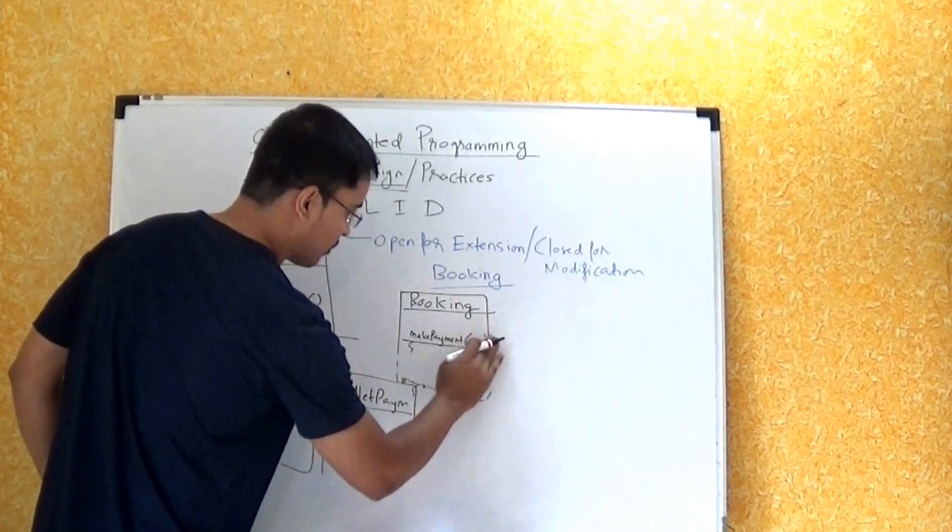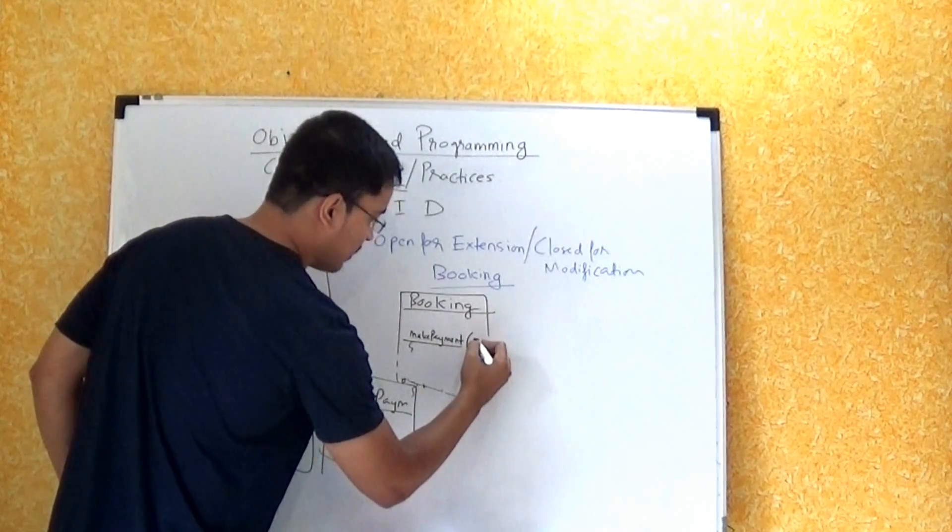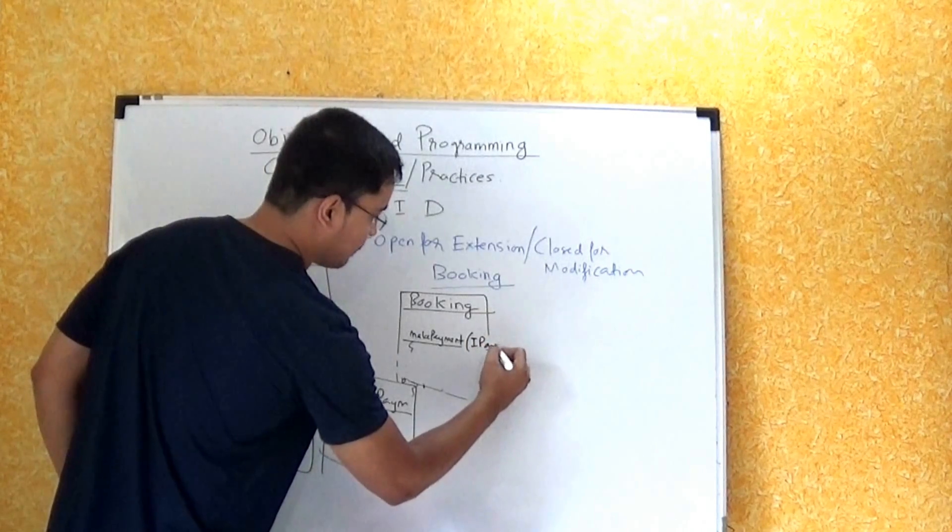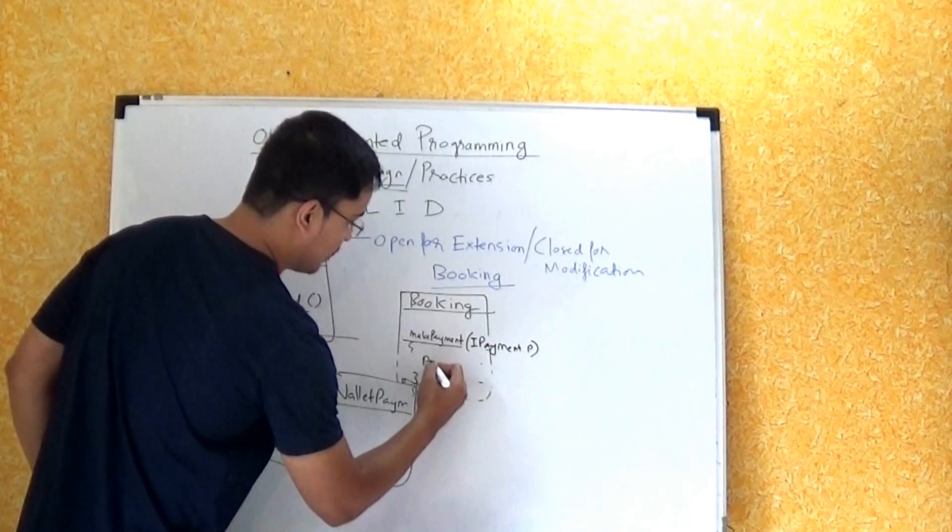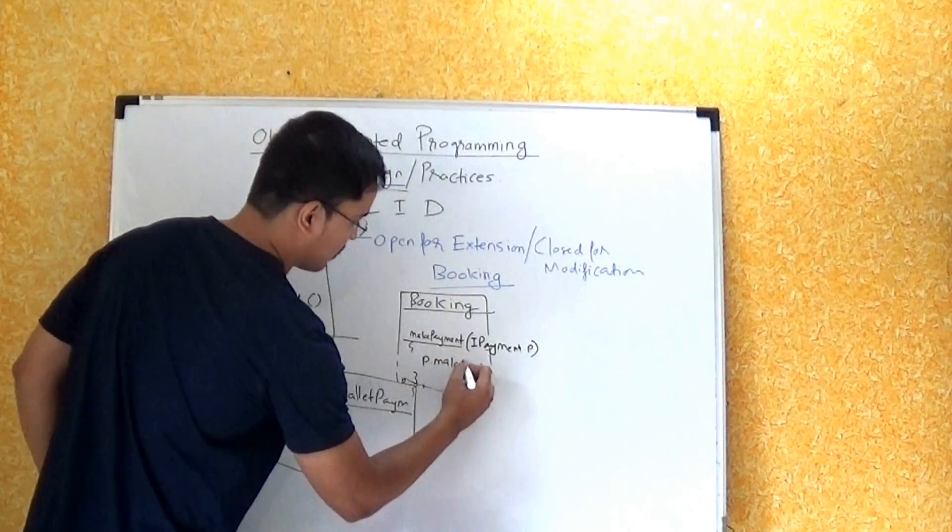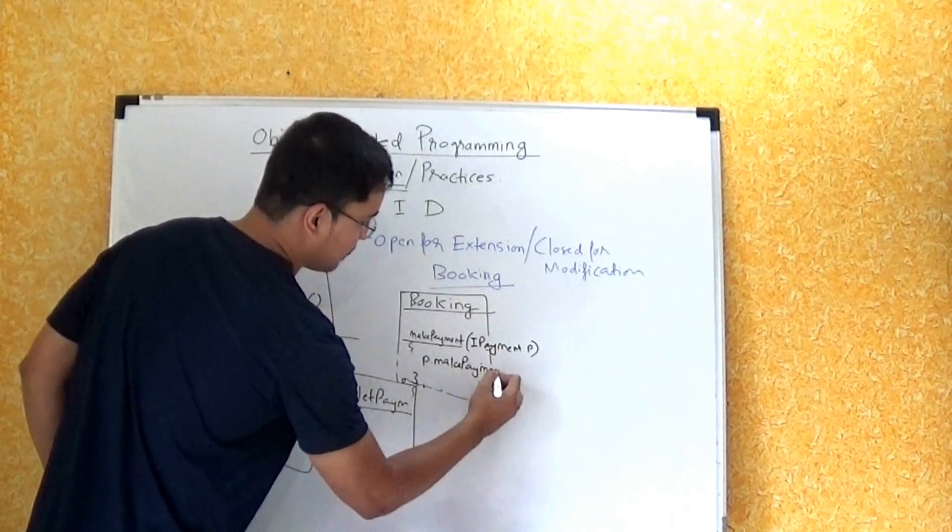we will not bother about that. We will just say MakePayment and some instance of IPayment and just call p.MakePayment.